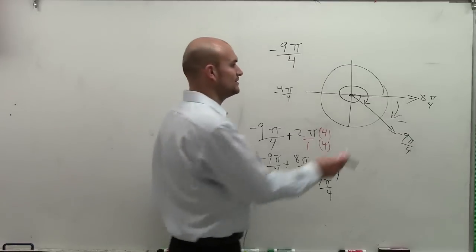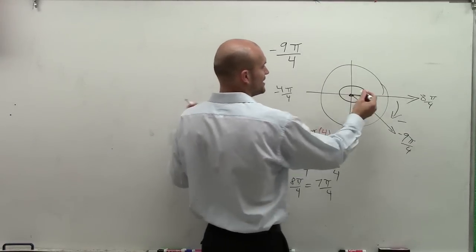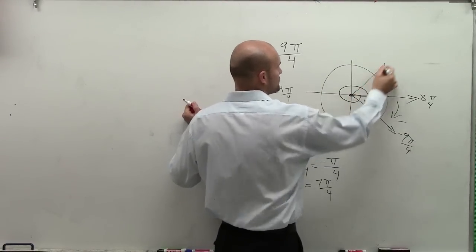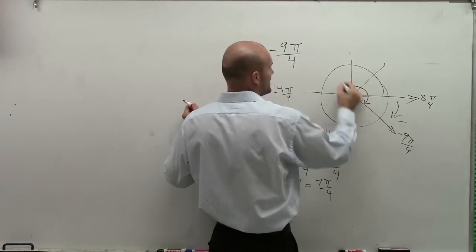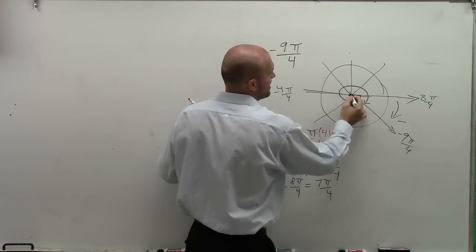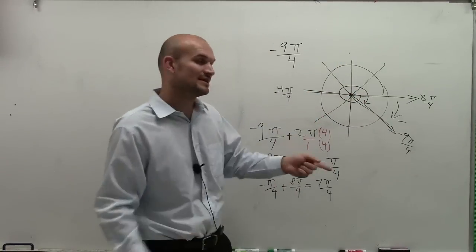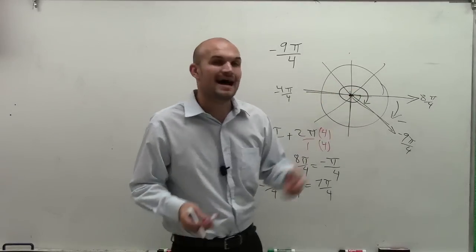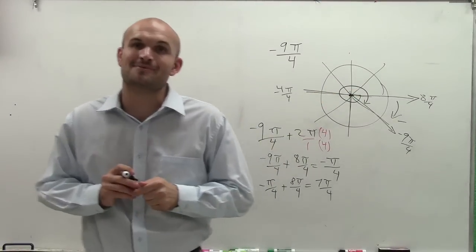And let's take a look at that. If we wrote that 7 pi over 4, right? If this is 4 pi over 4, that means 1 pi, 2 pi, 3 pi, 4 pi, 5 pi, 6 pi, 7 pi over 4. So again, if I just did 7 pi over 4, I would still have the same initial and terminal side.